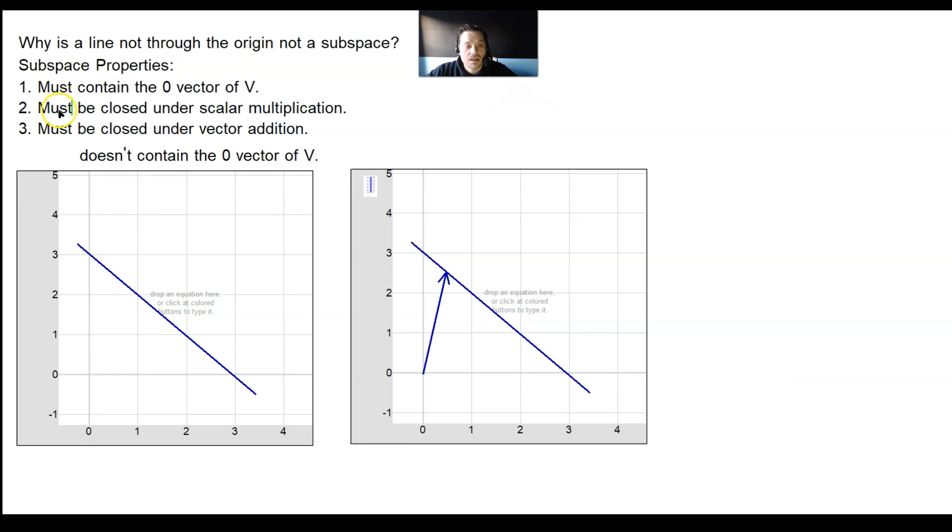And now look, it says must be closed under scalar multiplication. A line to the origin is not closed under scalar multiplication. For the following reason, take a look.